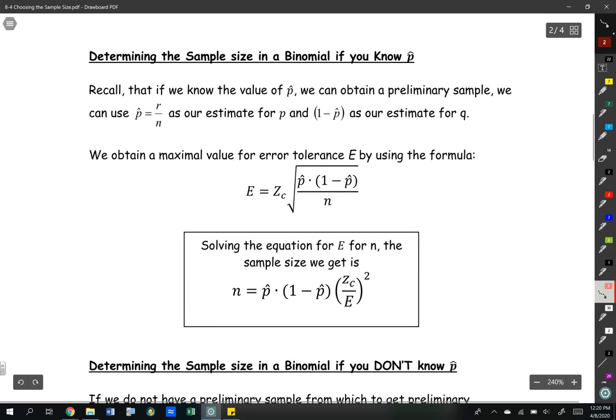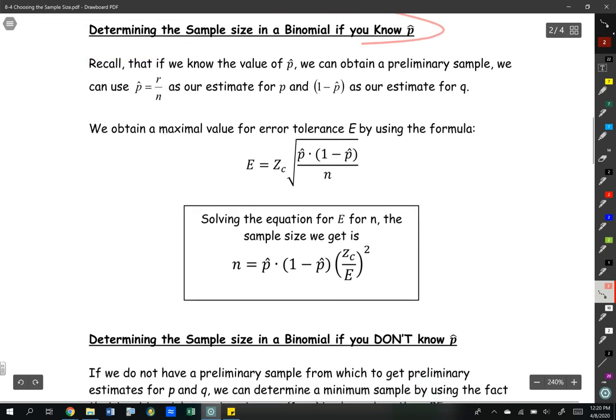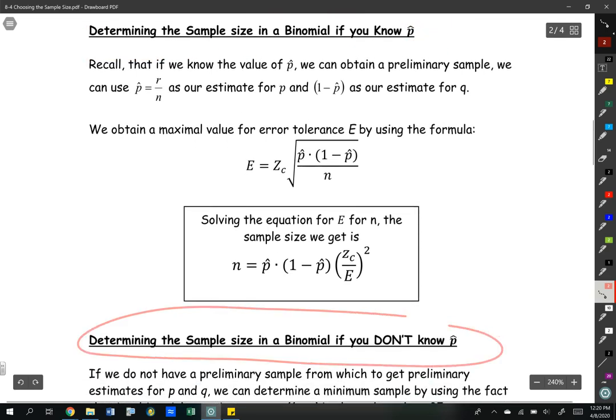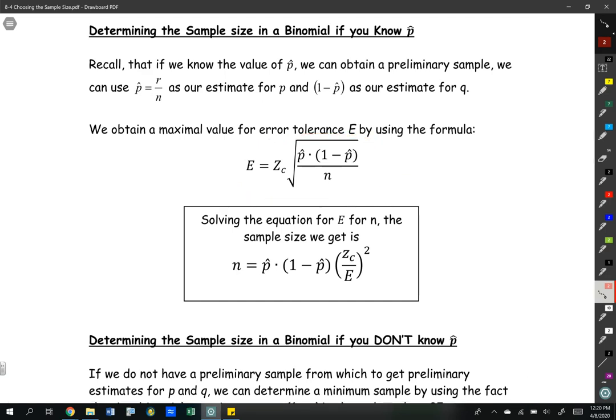Next, we're going to be looking at two more scenarios: determining the sample size in a binomial when we know p-hat and determining the sample size in a binomial if we don't know p-hat. If we know p-hat, we have our formula here. We're going to solve that formula for n. If you solve that formula for n, we're going to get what's in the box. That's if we have the proportion, if we know the number of successes and the number of trials and we're able to calculate p-hat.